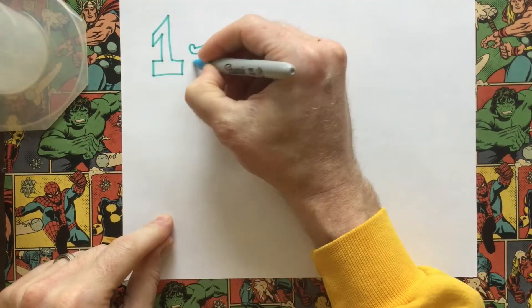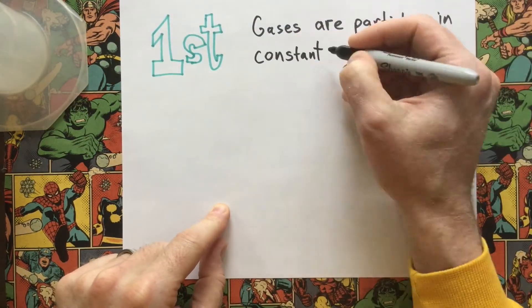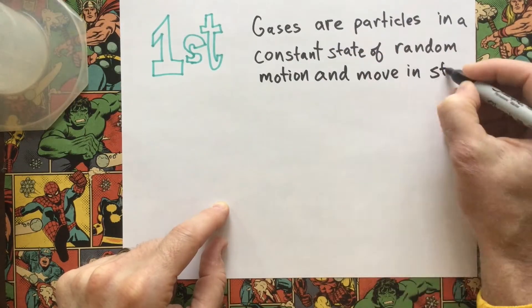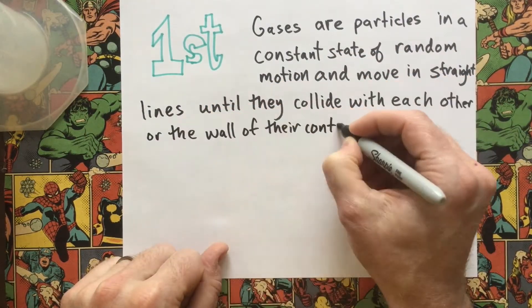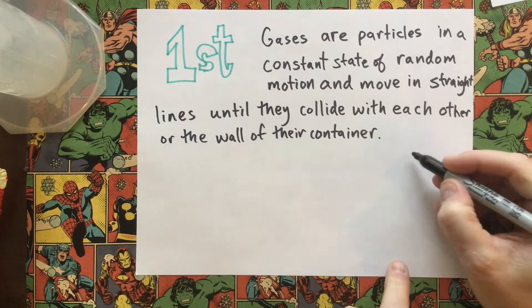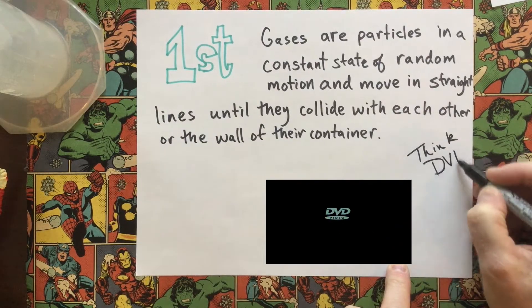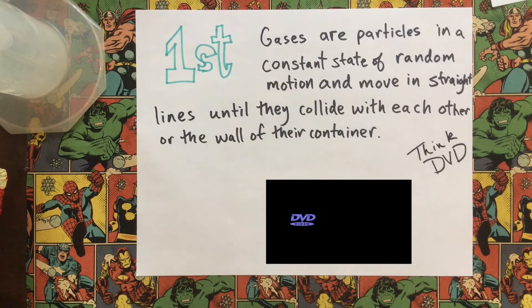First up, we have: gases are particles in a constant state of random motion and move in straight lines until they collide with each other or the wall of their container. Think DVD — if you've seen that little logo bouncing around the screen, you've witnessed how a gas particle will behave.